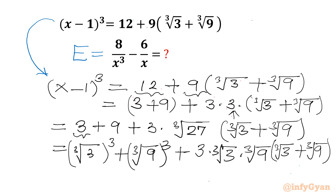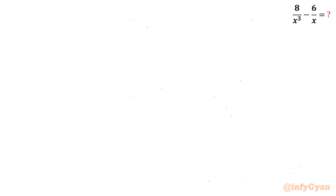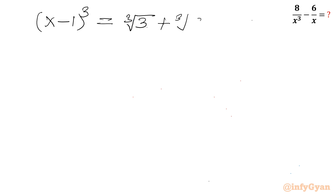The right hand side is recalling one powerful algebraic identity: a cubed plus b cubed plus 3ab in bracket a plus b. So cube root 3 is a and cube root 9 is b. We can now write our equation: x minus 1 whole cube is equal to a plus b whole cube, which is cube root 3 plus cube root 9 whole cube.